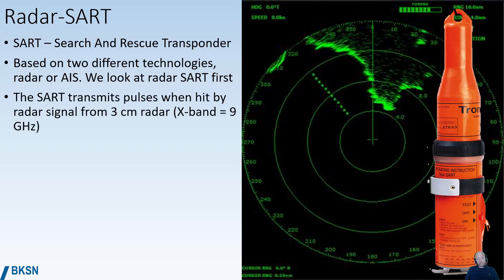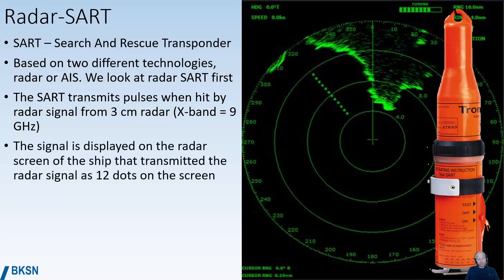A radar SART will transmit pulses when it's hit by a radar signal from a 3cm radar — that is an X-band radar, frequency about 9 GHz. The signal that it transmits will then be displayed on the radar screens of ships in the vicinity, or the ship that transmitted the initiating radar signal.